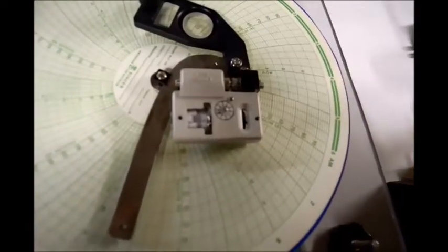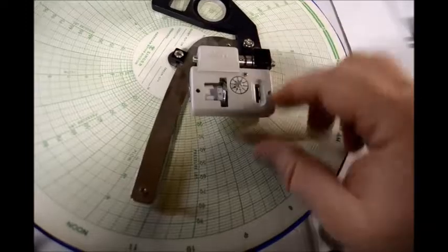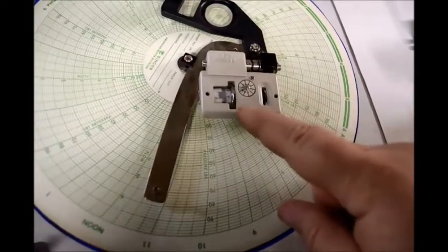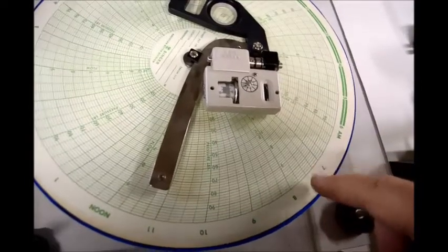Again, you read the vernier scale on this device and it gives you a count. The count is put in the formula and the formula gives you the average result of the chart.